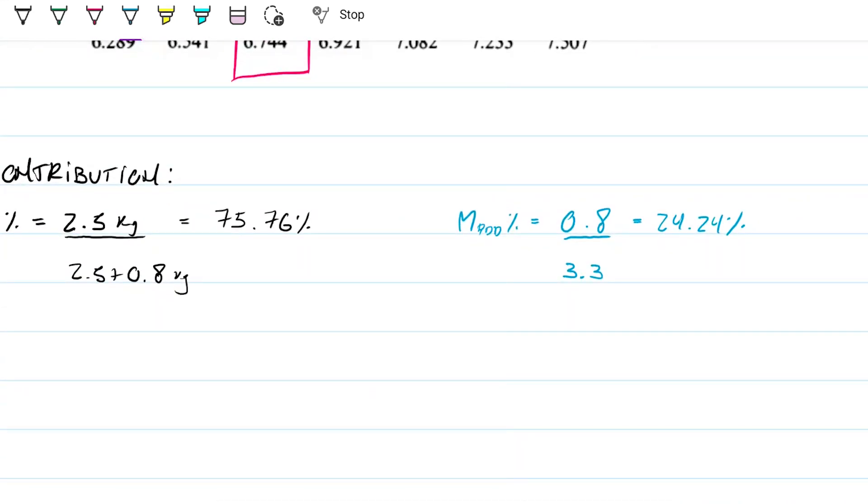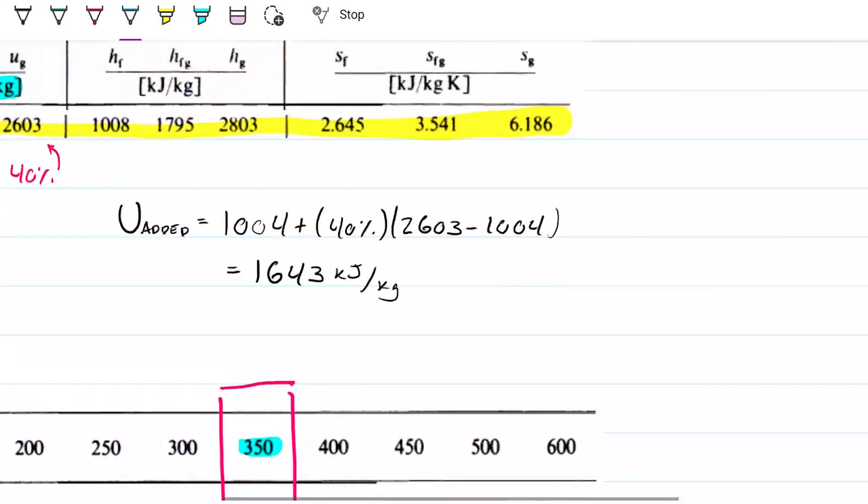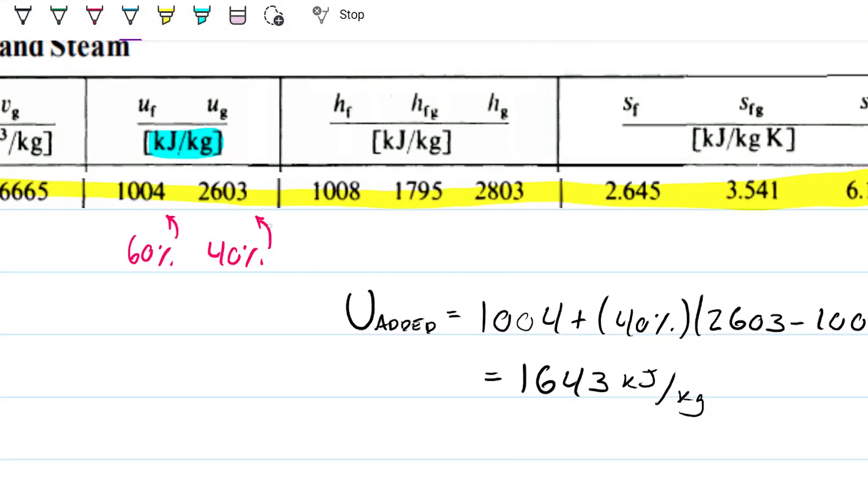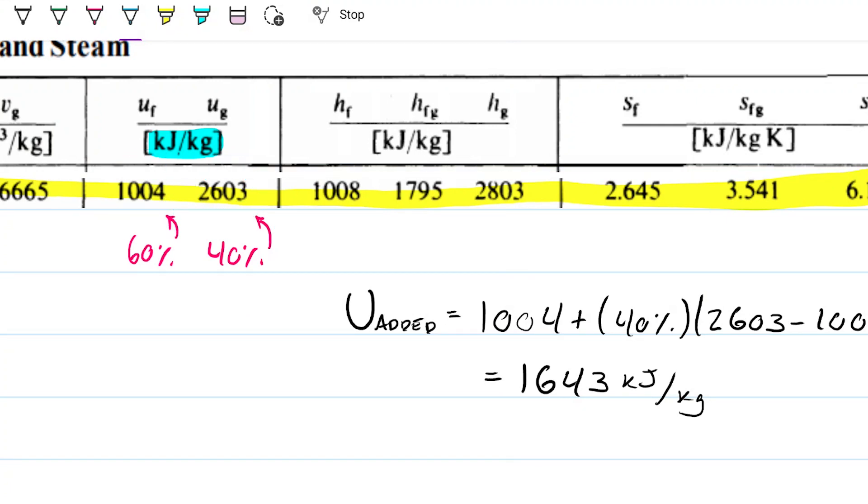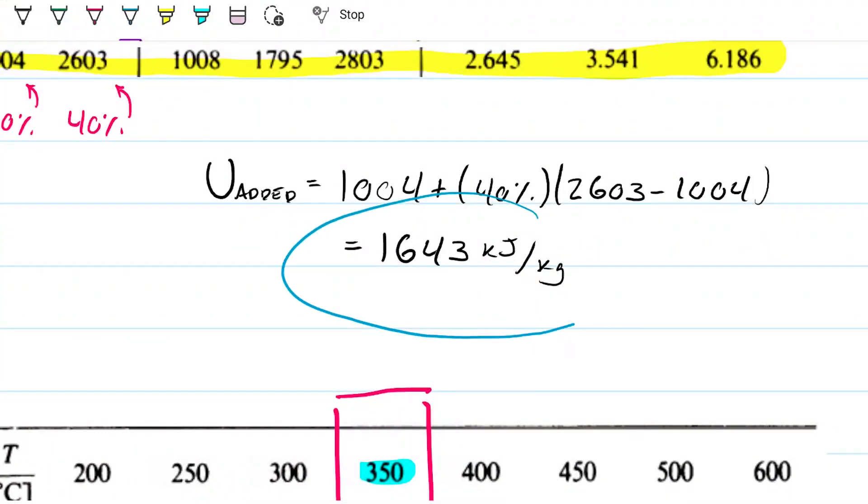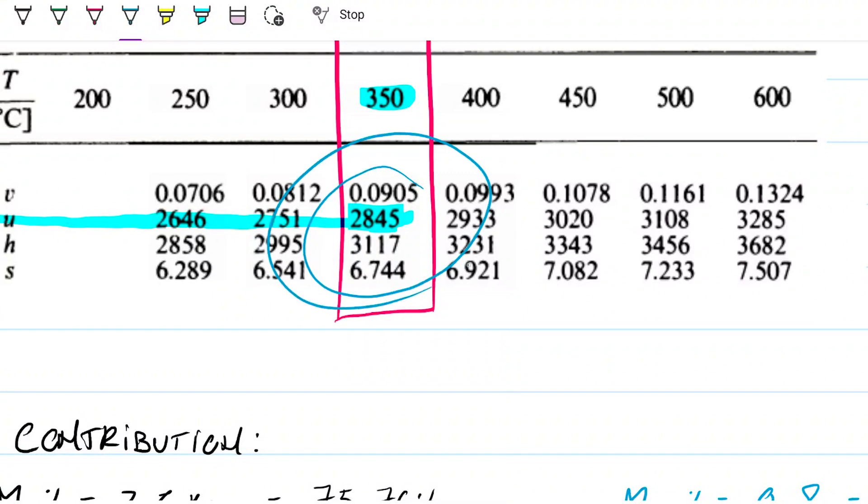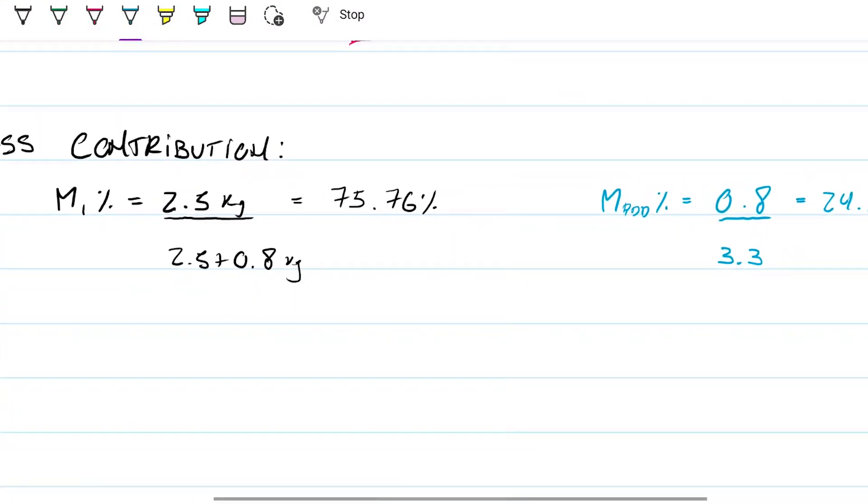And I'm going to use this as my criteria to see how much internal energy is coming from one and the other. So what I'm doing really is something very similar to what I did here, where I had 40% that I knew was this much energy and 60% that I knew was this much energy. I'm going to do the same exact method, considering this with the 24.24% and this with the 75.76%.